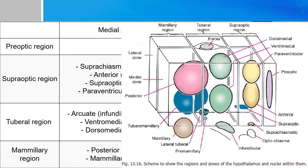The preoptic region spans both the medial and lateral portions and contains the supraoptic nuclei. In the supraoptic region medially, there are four nuclei: the suprachiasmatic nucleus, the anterior nucleus, the supraoptic nucleus, and the paraventricular nucleus.